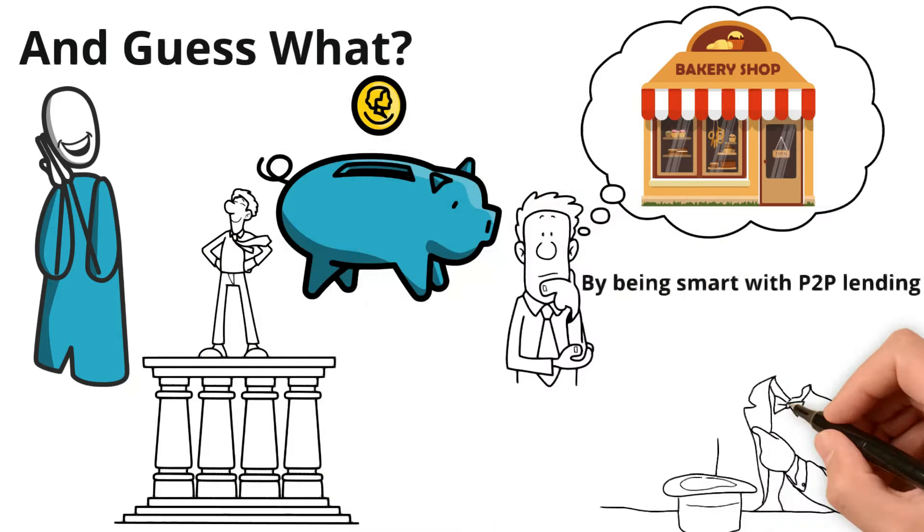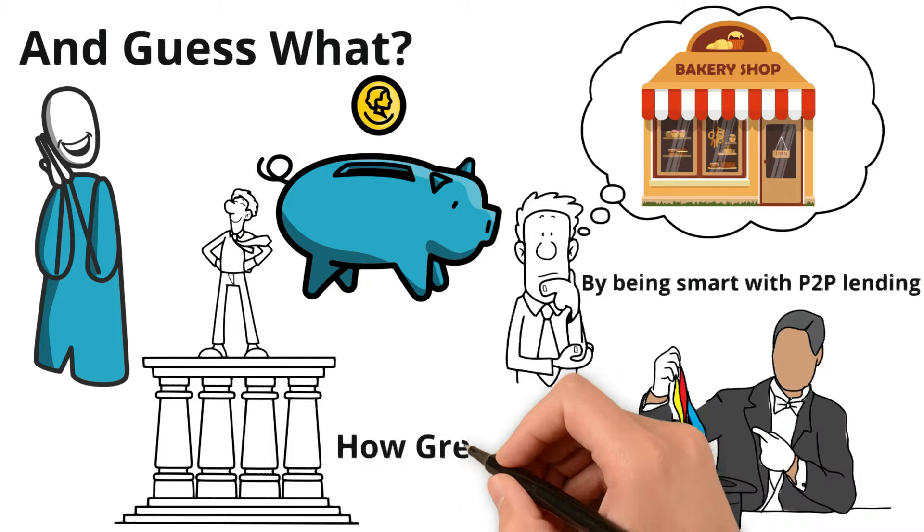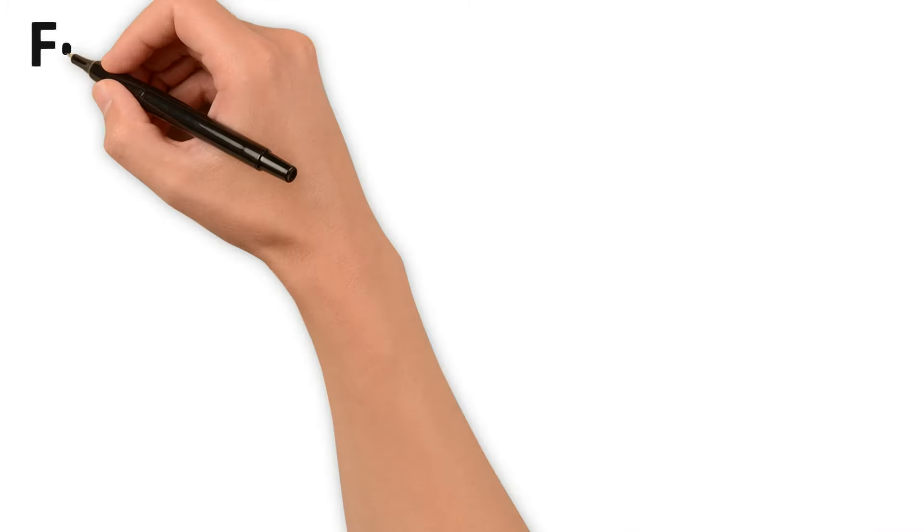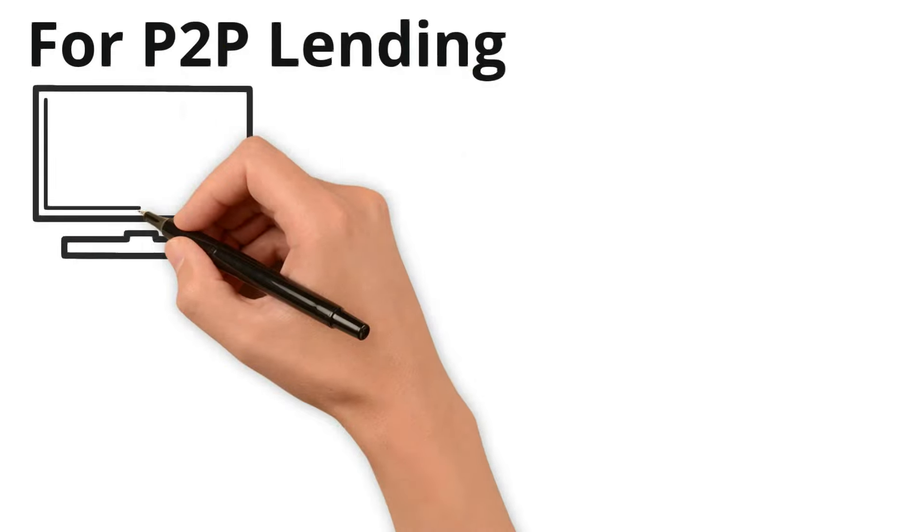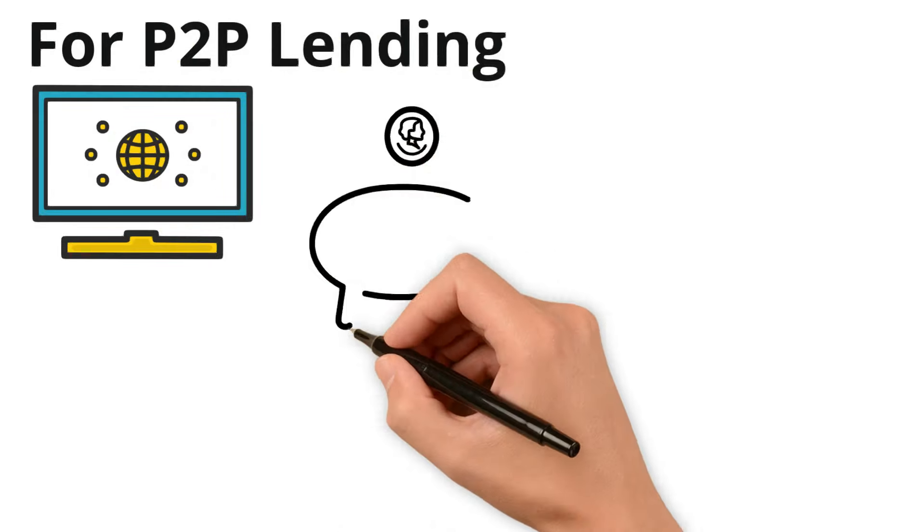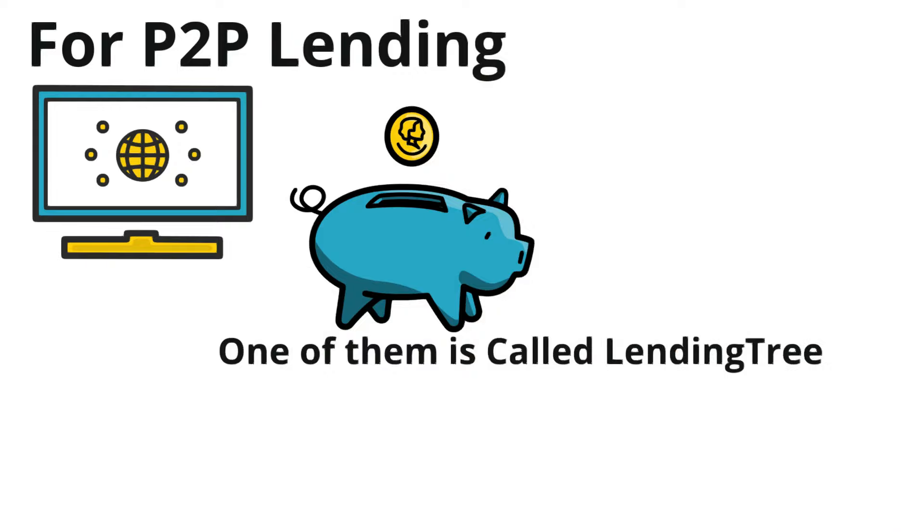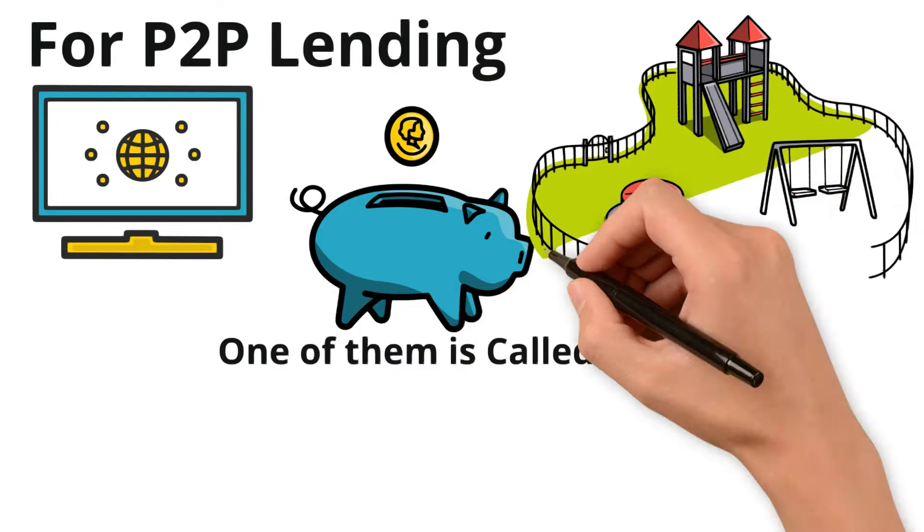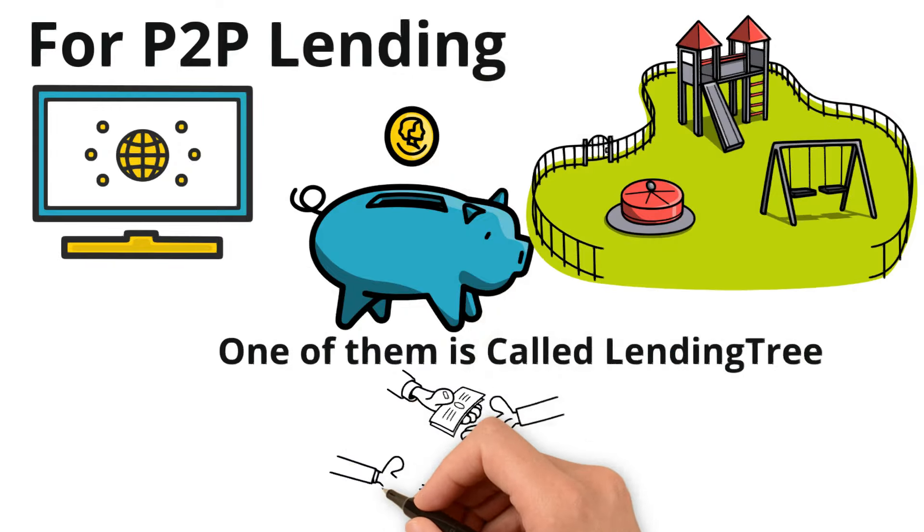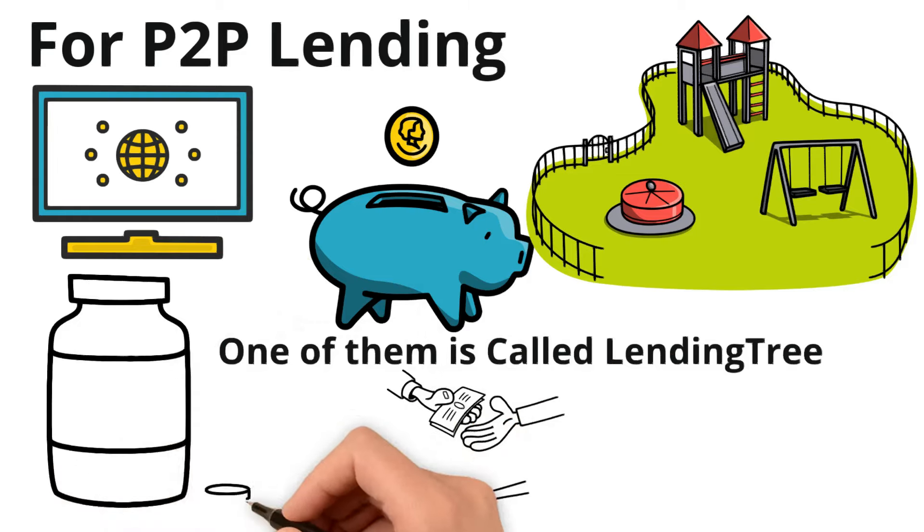For P2P lending there are some cool websites that can help you be like a mini bank safely. One of them is called Lending Tree. It's like a big online park where lots of people come to borrow and lend money.